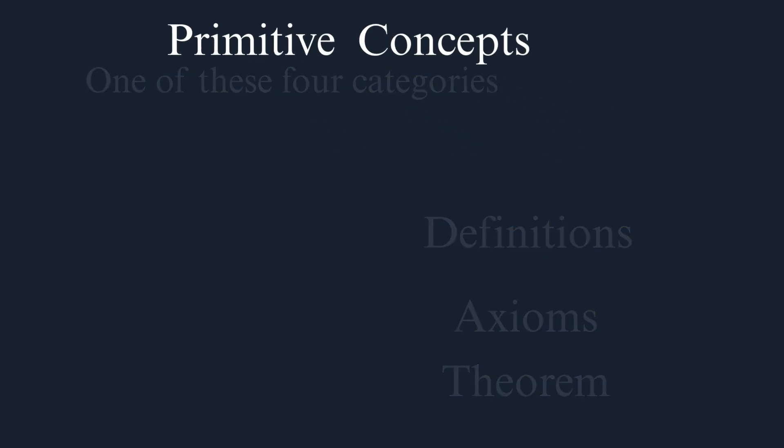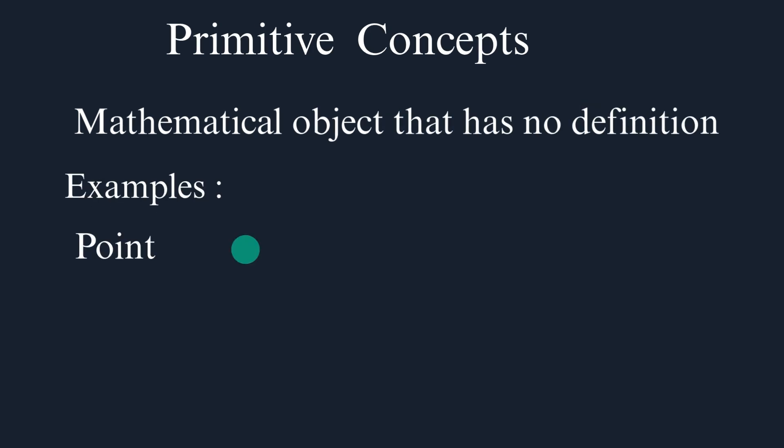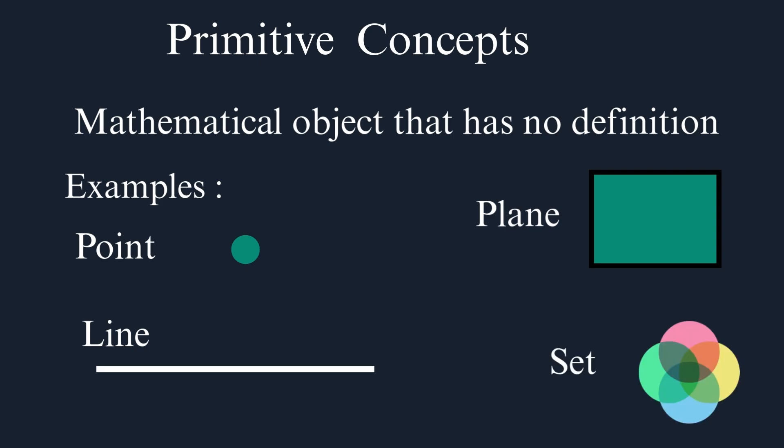What is a primitive concept? A primitive concept is a mathematical object that has no definition. Examples of primitive concepts: Point, line, plane, and set. All these objects have no definition. We simply accept that they exist and don't give definitions to them.